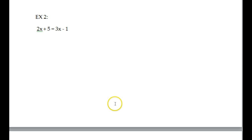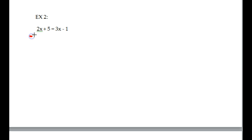Example 2 now — same process. Again, I'm going to look and see which variable is less: the 2x or the 3x. The 2 is less. Look at the sign in front — there is no sign, which indicates a positive number. So how do you undo a positive 2x? You subtract it. So what are you going to do to both sides? Subtract the 2x from both sides.